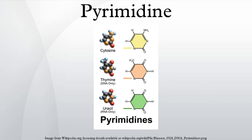Nucleotides: Three nucleobases found in nucleic acids are pyrimidine derivatives. In DNA and RNA, these bases form hydrogen bonds with their complementary purines. In DNA, the purines adenine and guanine pair up with the pyrimidines thymine and cytosine, respectively.